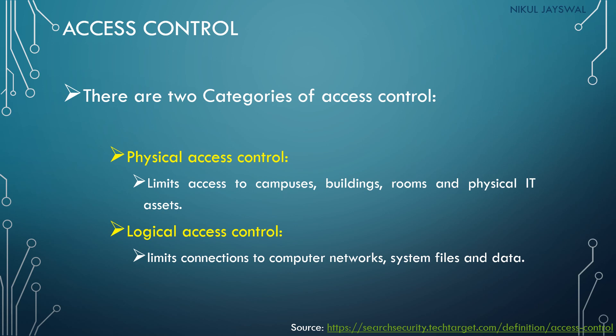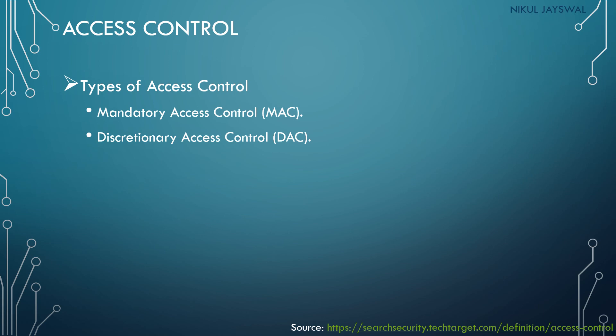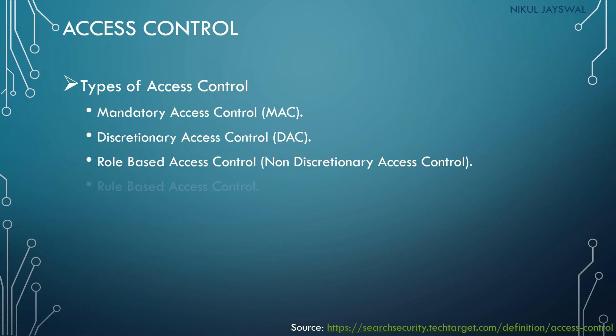There are four major types of access control systems. First is Mandatory Access Control, also called MAC — the strictest type of access control. Second is Discretionary Access Control, which most desktop operating systems provide by default. Third is Role-Based Access Control, also called non-discretionary access control. Fourth is Rule-Based Access Control.